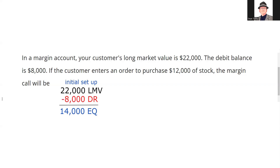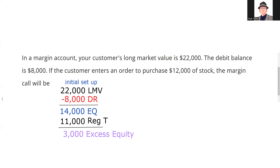We love lending customers money — it's one of our all-time favorite things to do. So we're going to compare what you have to Reg T, which is half of the market value. Half of $22,000 is $11,000. On $22,000 in collateral, I can lend you up to $11,000, and you've only borrowed $8,000. Another way to think about it: you only need $11,000 in equity, and you have $14,000 in equity.